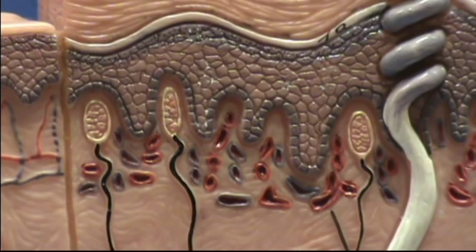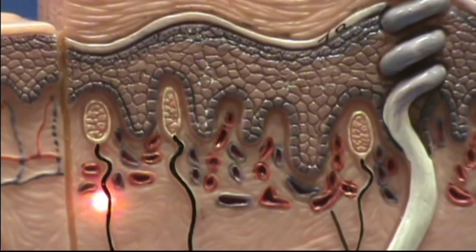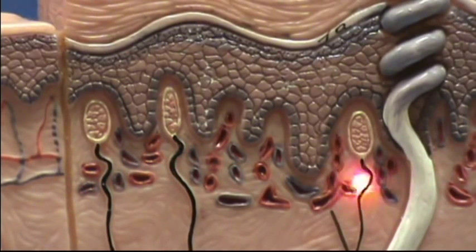Notice that there are nerves which are exiting from these corpuscles, represented by these black lines. These black lines represent nerves.